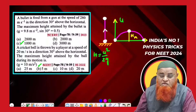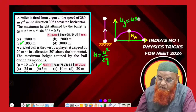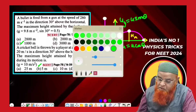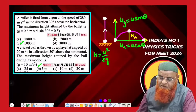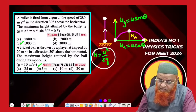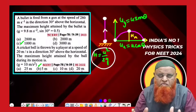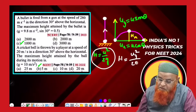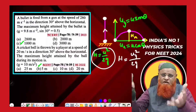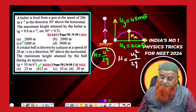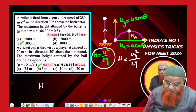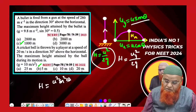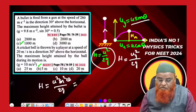For oblique projectile motion, the initial velocity along the y-axis is uy = u sin θ, and along the x-axis ux = u cos θ. For maximum height, simply write h = uy²/2g. Substituting uy = u sin θ gives h = u² sin²θ / 2g — no formula memorization needed.